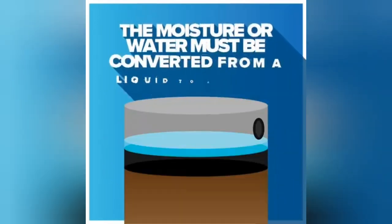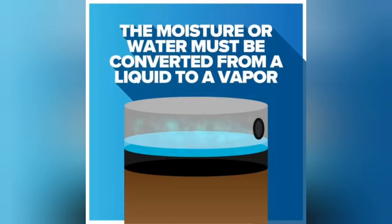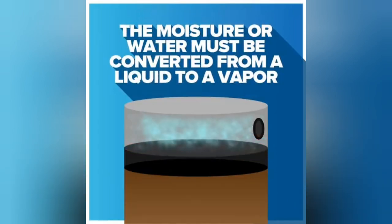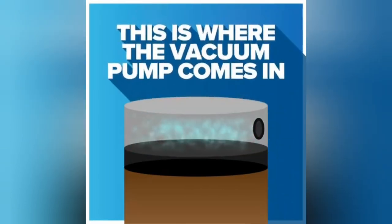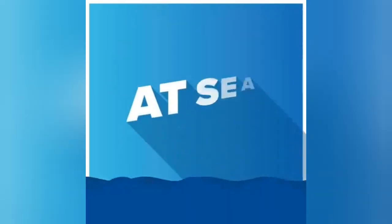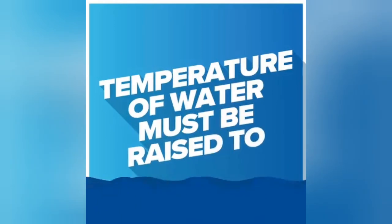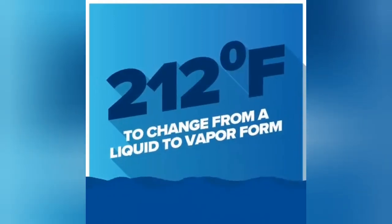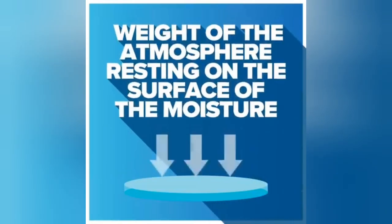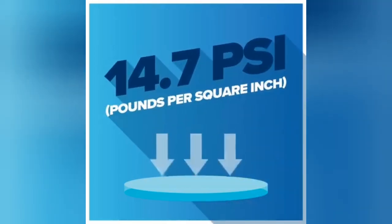The moisture or water must be converted from a liquid to a vapor before it can be drawn out of the system. This is where the vacuum pump comes in. At sea level, the temperature of water must be raised to 212 degrees Fahrenheit to change from a liquid to a vapor. This is due to the weight of the atmosphere resting on the surface of the moisture, which is 14.7 psi bearing down on that moisture.